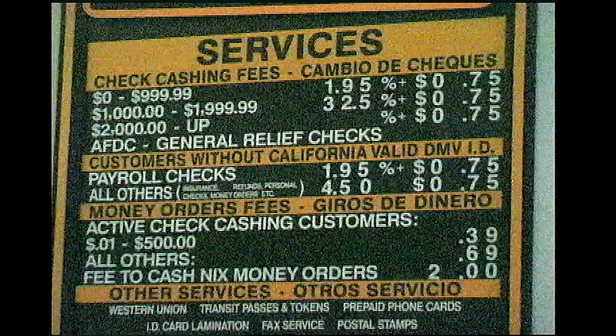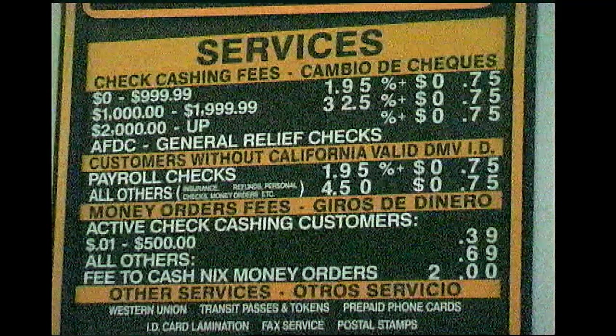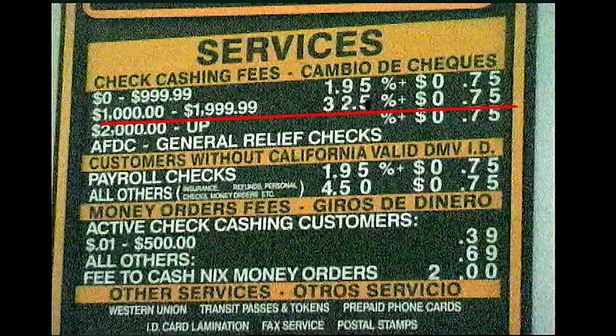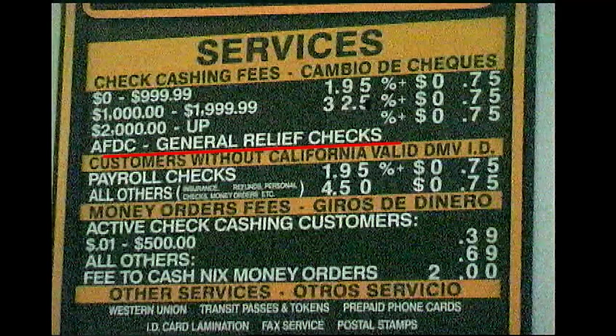But wait. When you look at the other sign at Nick's Check Cashing, you read this: $0 to $999.99, 1.95% plus 75 cents. And $1,000 to $1,999.99, 3.25% plus 75 cents. The 1% Check Cashing is only for AFDC checks.